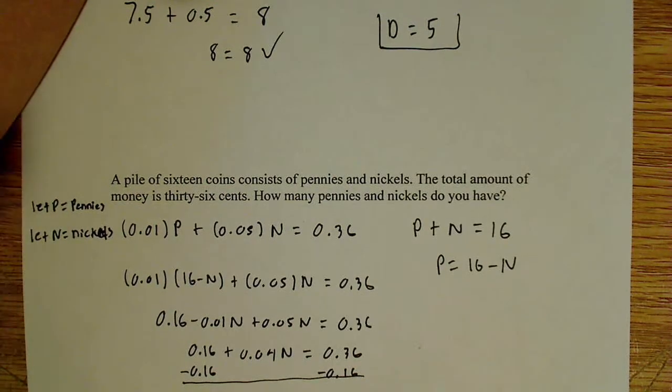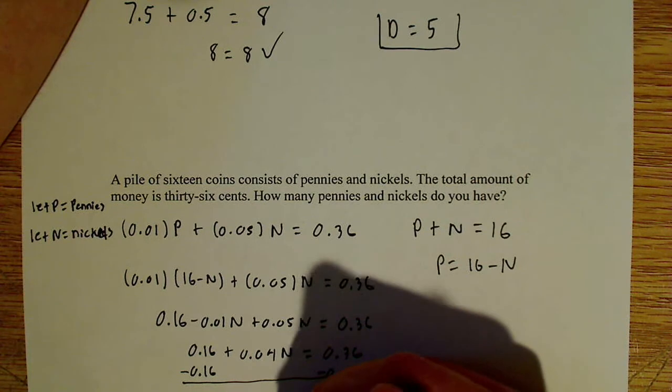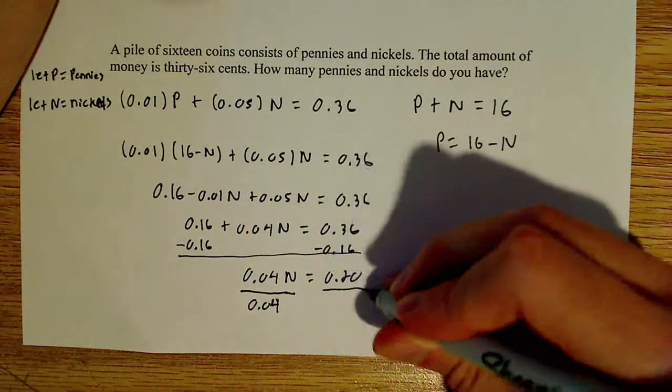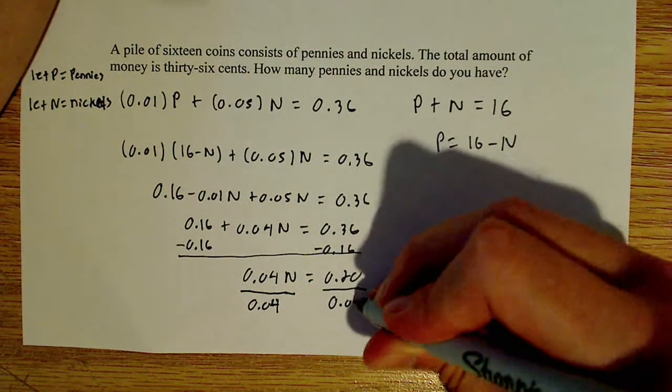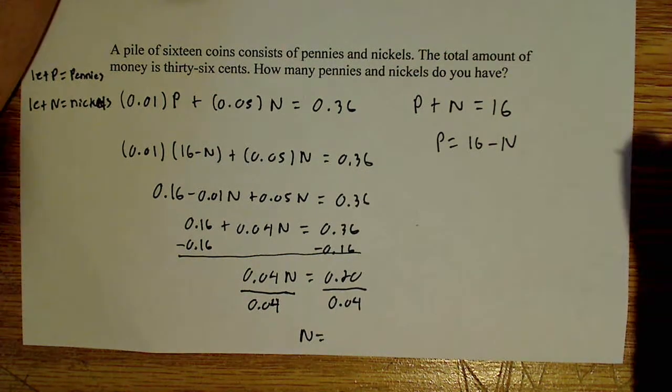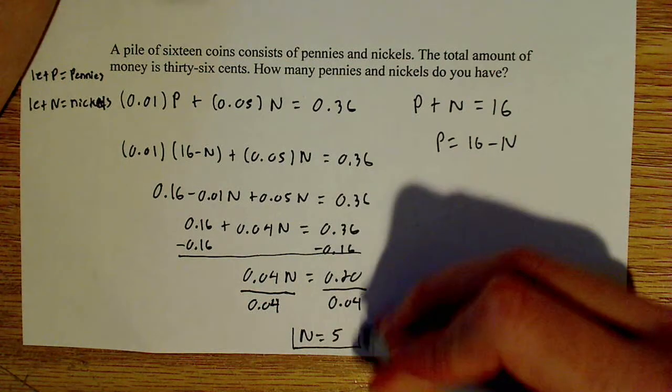Now all we have to do here is divide both sides by 0.04. 0.04, let me see if I can get that on camera there, and this side by 0.04, and we solve for N. So what does N equal? N is equal to 5.